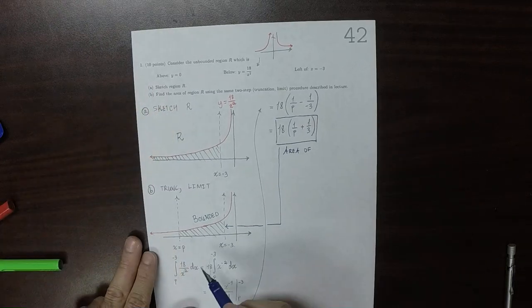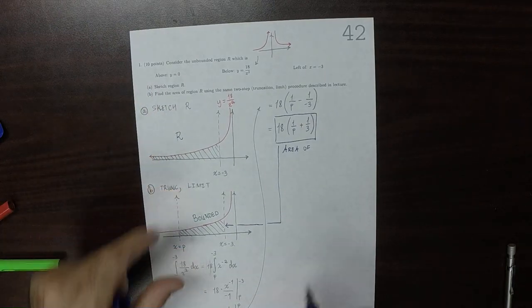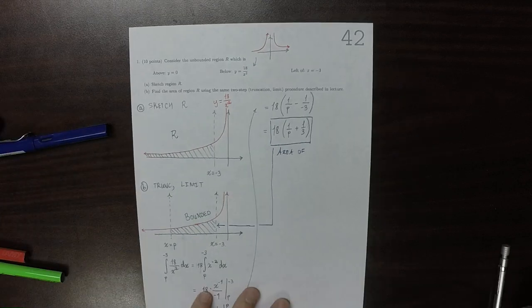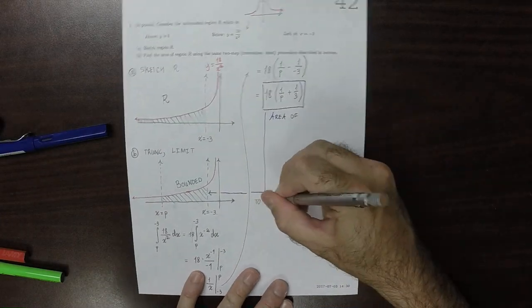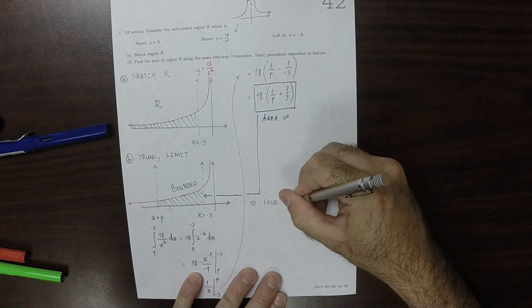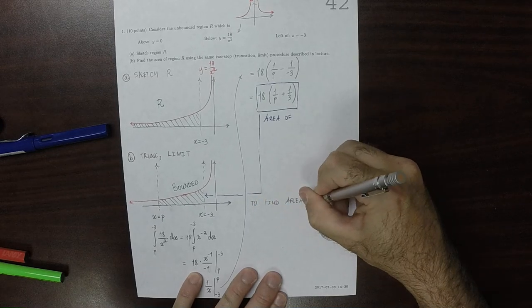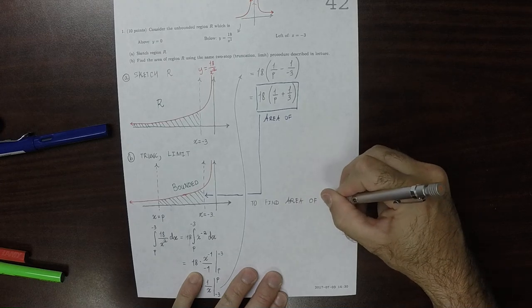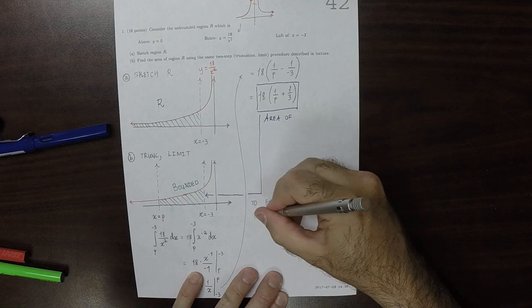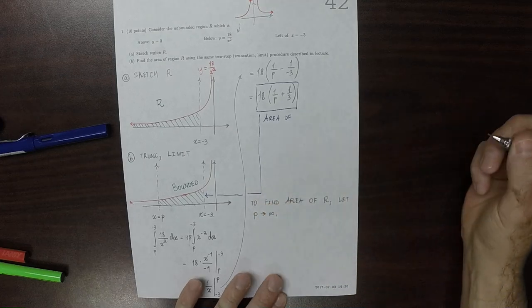So that makes sense because as P moves around, the area changes. So to find the limit, or to find the area of R, we're going to let P go to infinity.